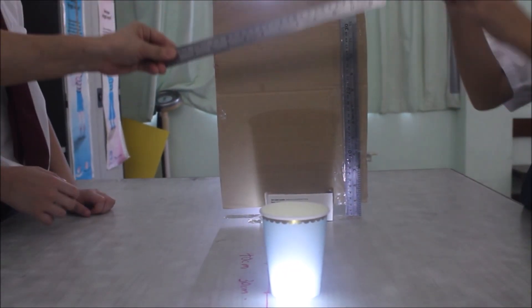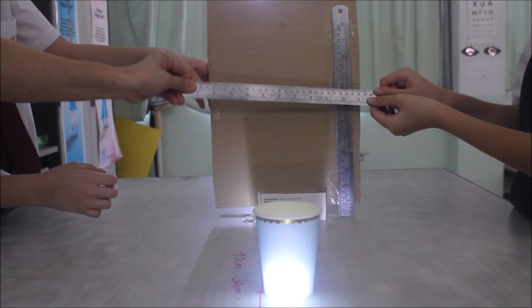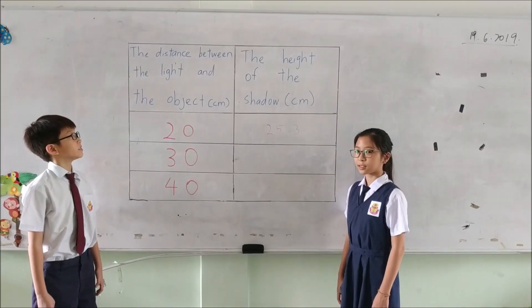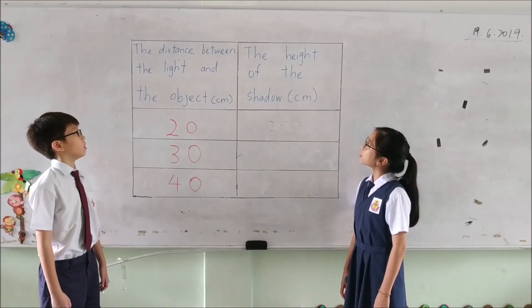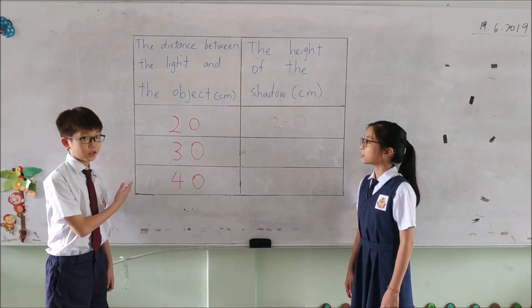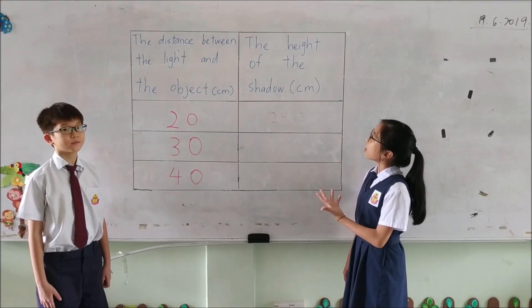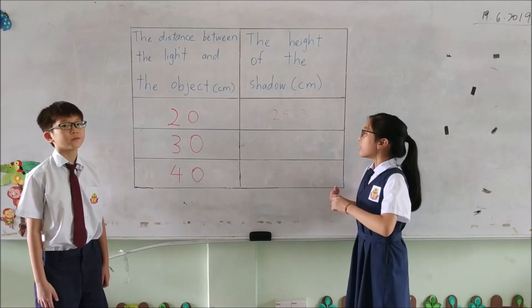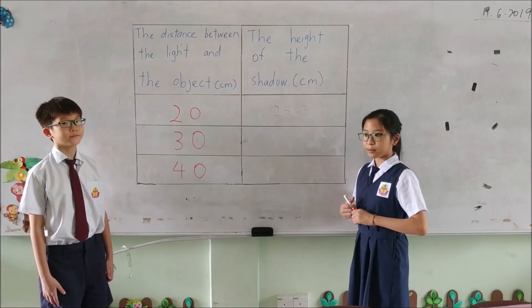We have to measure the height with a ruler. When the distance between the light and the object is 30cm, then the height of the shadow is 17.3cm.